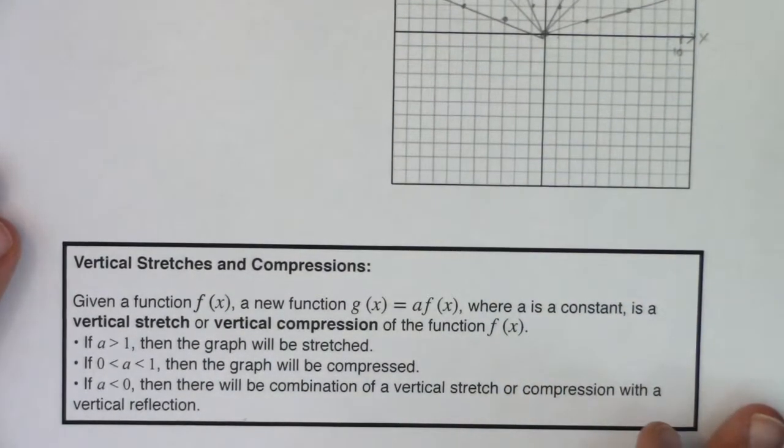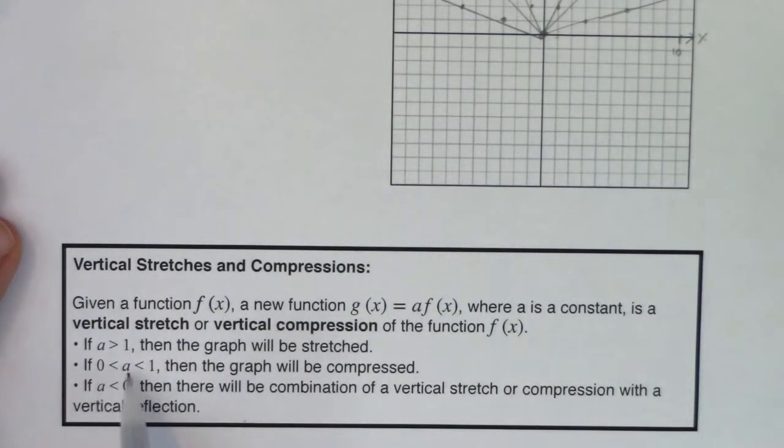On the flip of that, if you have a fraction, alright? If a is between 0 and 1, then the graph will be compressed. If a is less than 0, if it's negative, there's going to be a combination of a vertical stretch or a compression with a vertical reflection. And we'll talk about reflections a little bit later on down the line. So when I say if a is greater than 1 versus a is between 0 and 1, we're talking about a number larger than 1 versus a fraction. So when we did double absolute value of x, we were having a vertical stretch. When we had 1 third the absolute value of x, we were being compressed. We were kind of being pushed down.